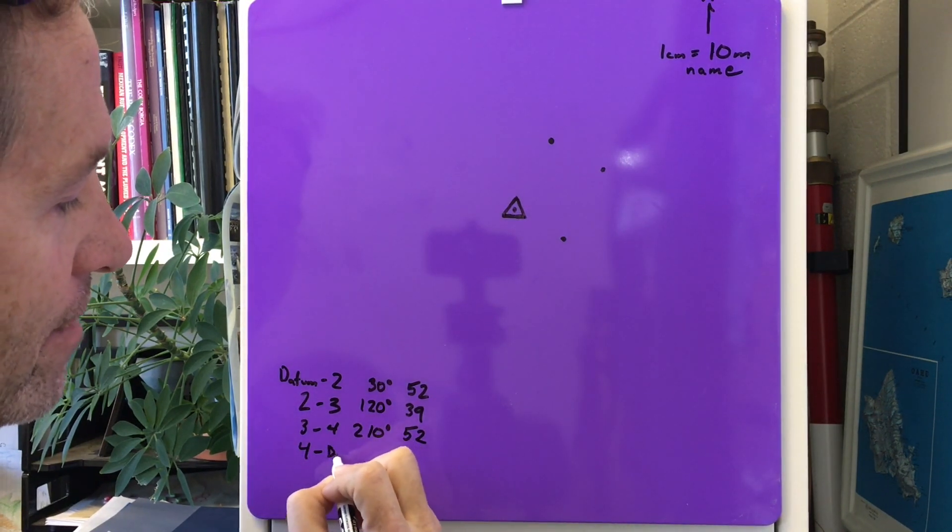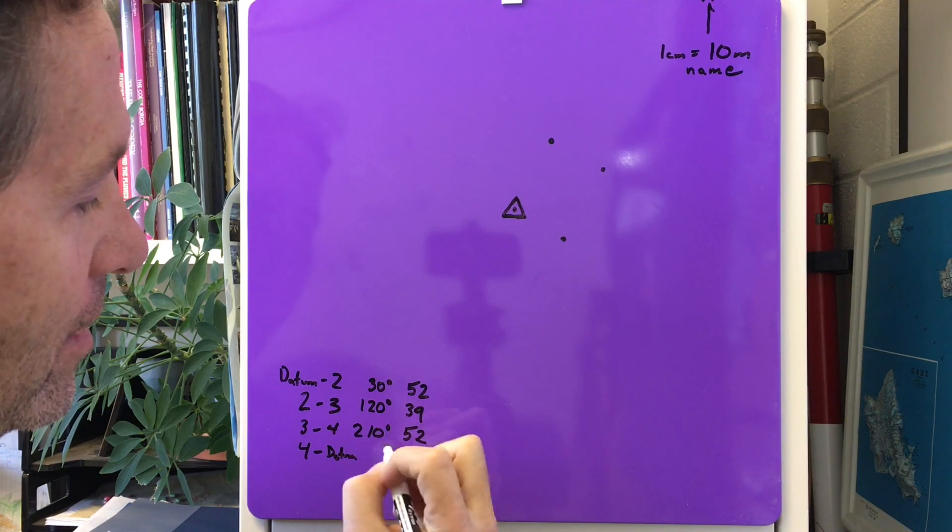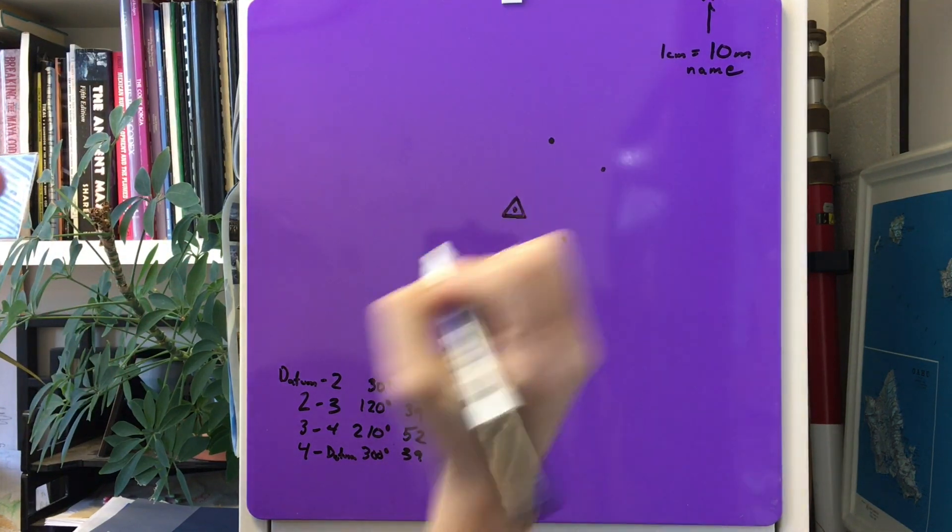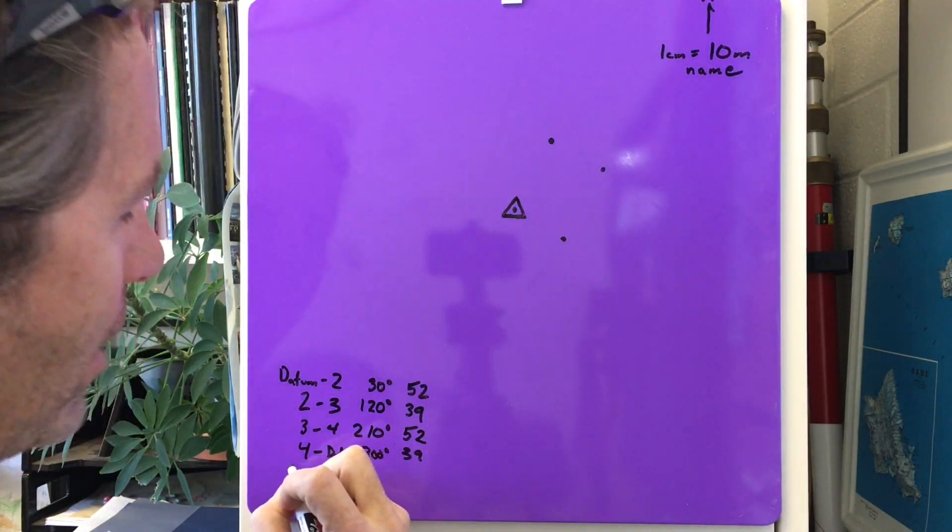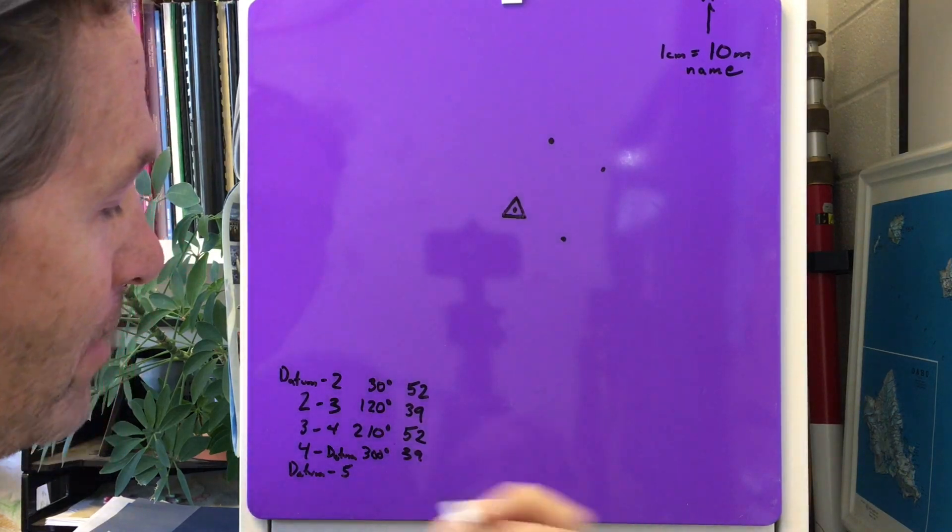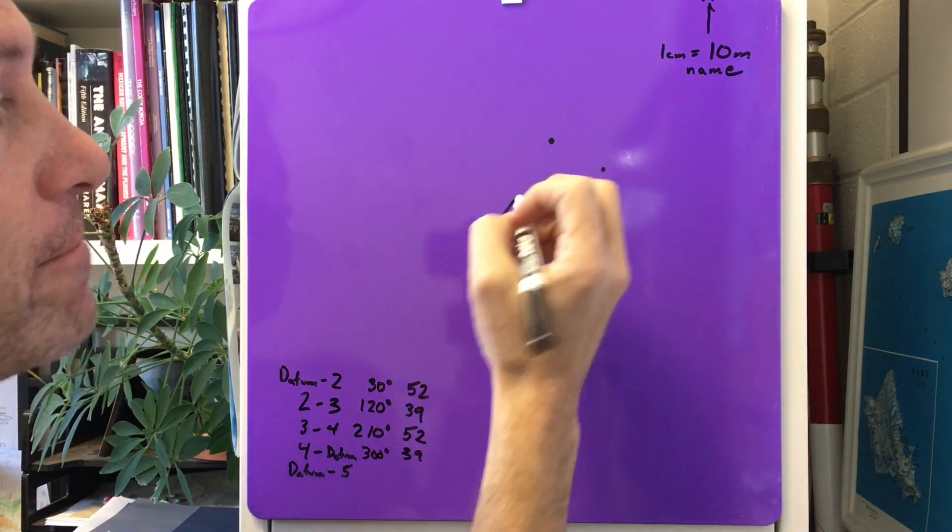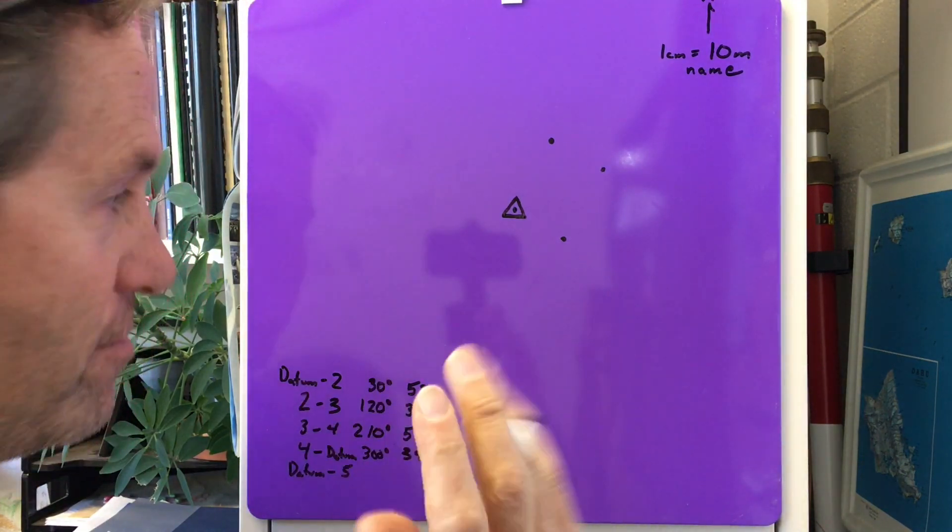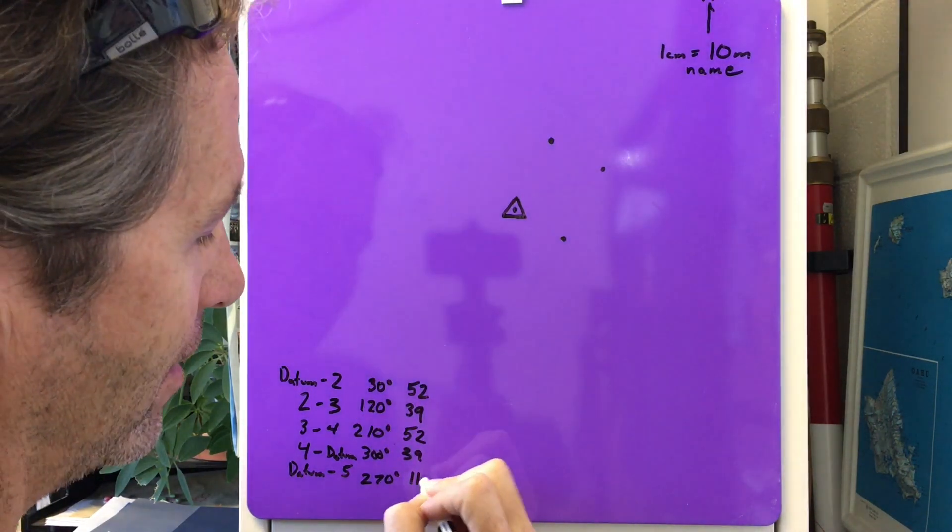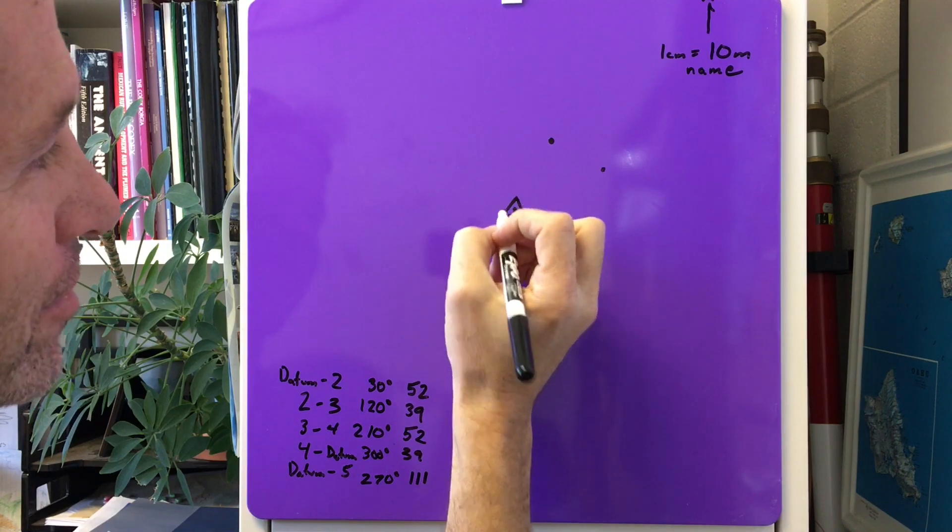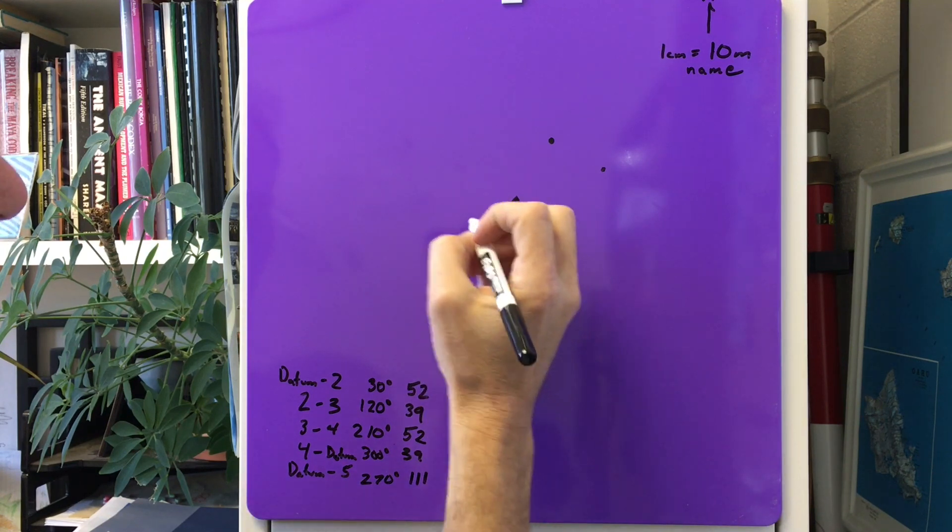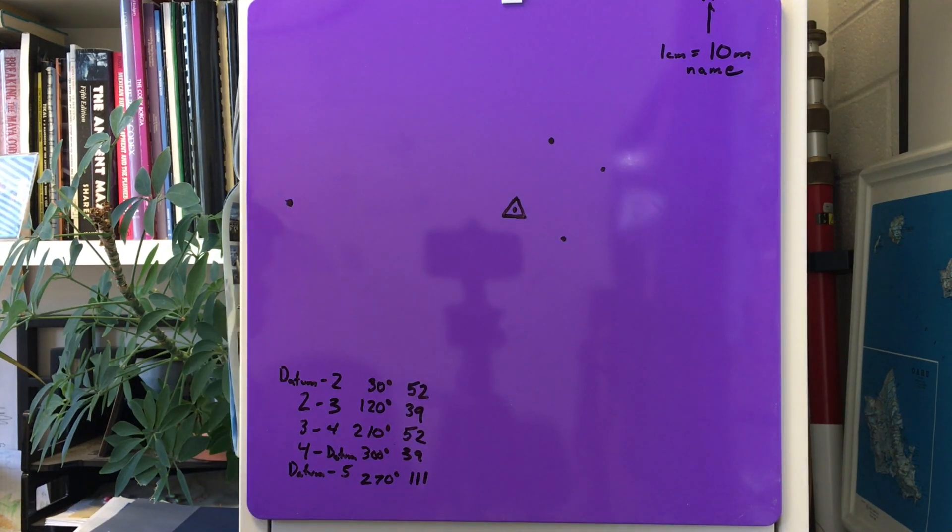Then I'll have one more going back - point four back to datum. To give myself a perfect square, it's 300 degrees and 39 meters. That would take me directly back to the datum. Now we often have a fifth point, datum to point five, and that's going to be like to a tree or to a bush, something away from the building. Let's say it's 270 degrees at 111 meters. So 270 degrees is going to be out here, and this would be 11.1 centimeters, somewhere out here like this.